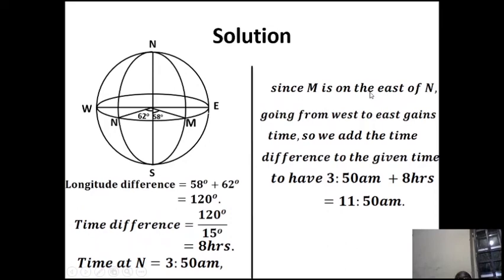If the sum exceeds 12 hours, it changes from a.m. to p.m. with a subtraction of 12. For example, if you added 10 hours to 3:50, you would get 13:50 — then 13 minus 12 gives 1:50, and it changes from a.m. to p.m., so you record 1:50 p.m.